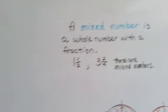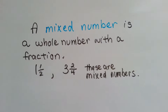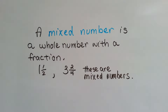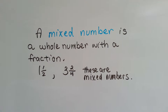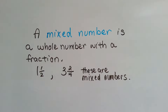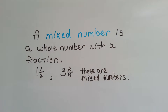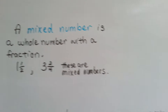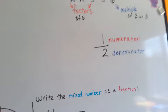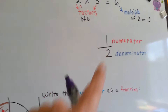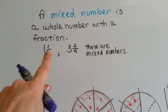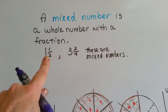A mixed number is a whole number with a fraction next to it. For example, one and a half, or three and two-fourths — these are mixed numbers. The numerator is on the top and the denominator is on the bottom, and then we have a whole number next to them.